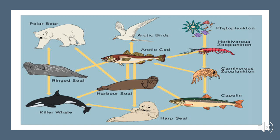Now in this picture, you will see there are different animals that you can find in the Arctic. We have here a polar bear, Arctic birds, phytoplankton, herbivorous zooplankton, Arctic cod, ring seal, killer whale, harbor seal, harp seal, capelin, and carnivorous zooplankton.